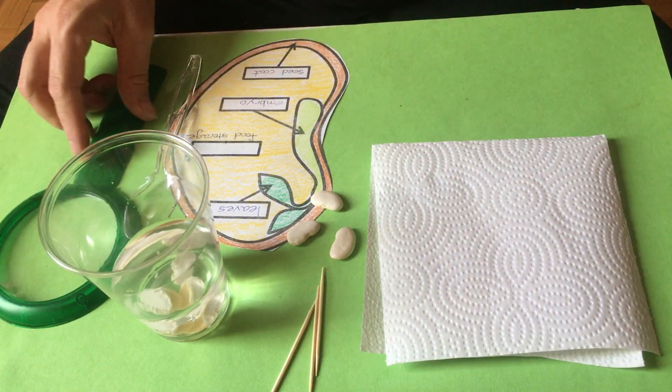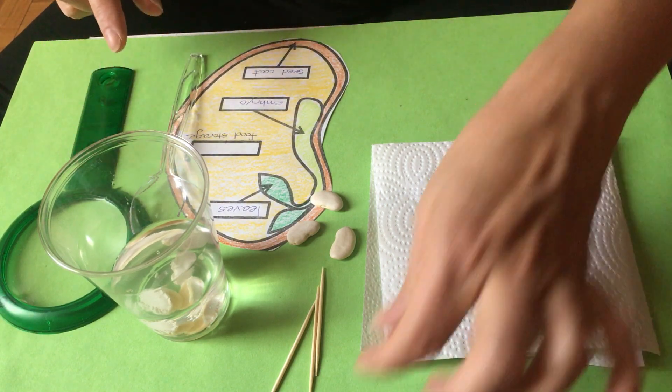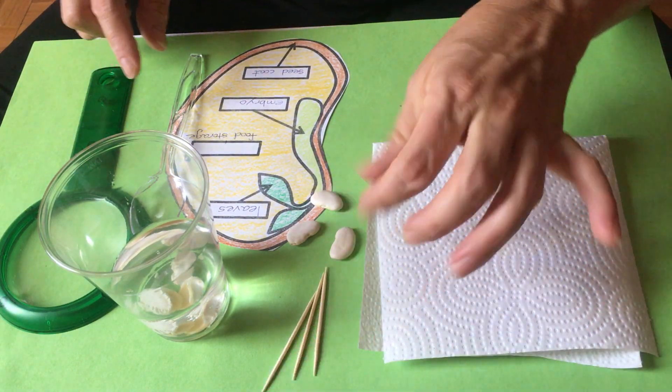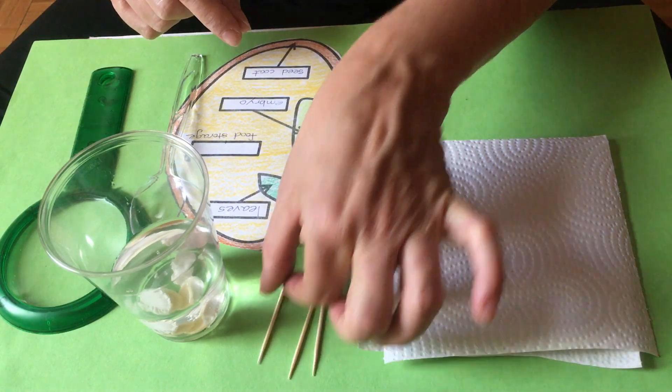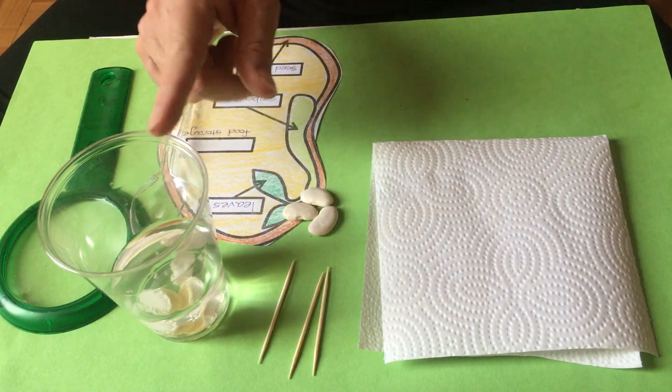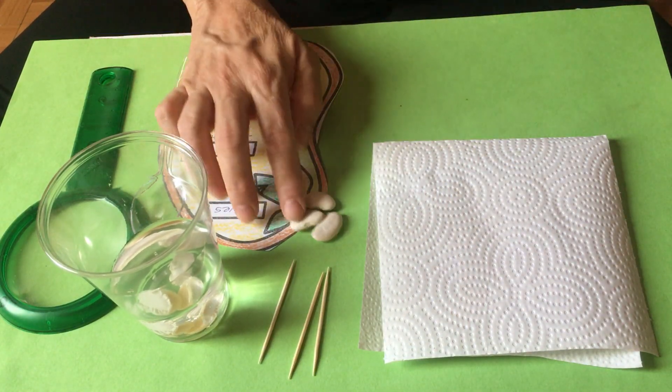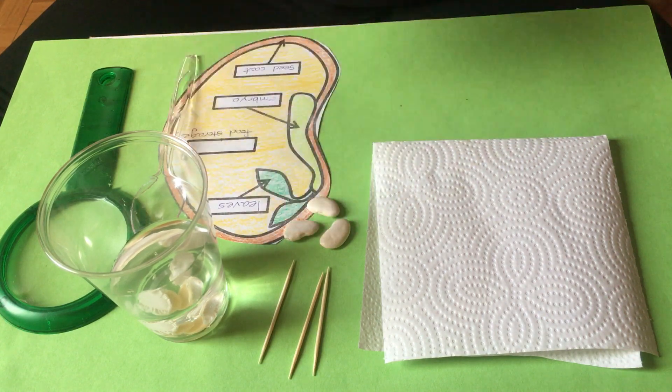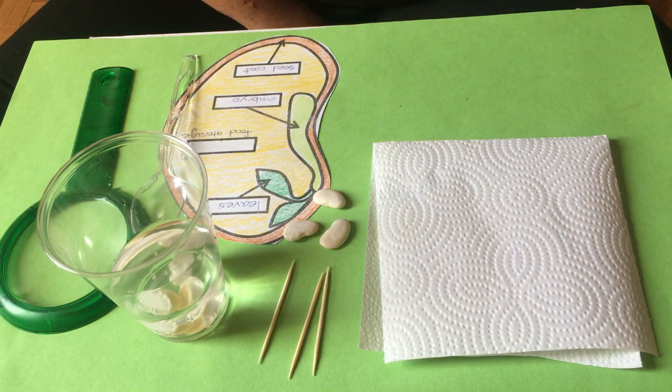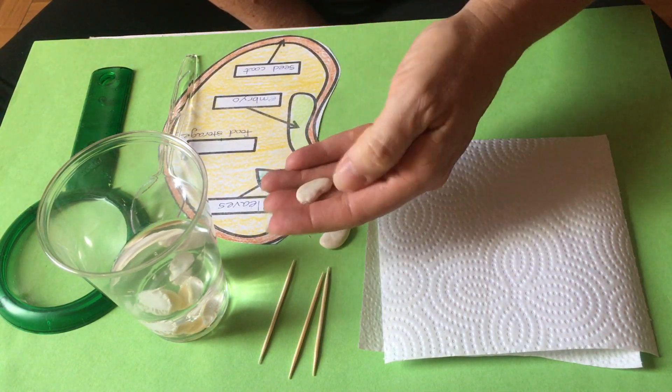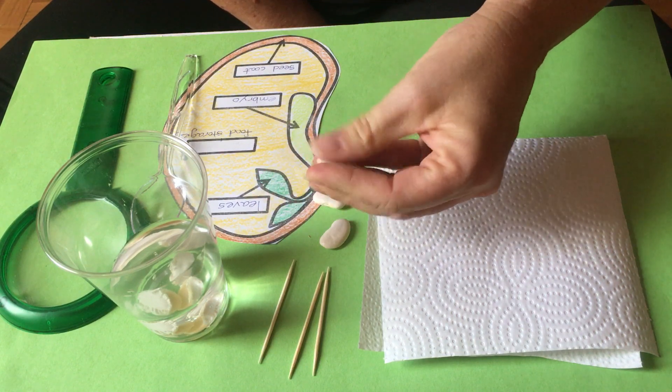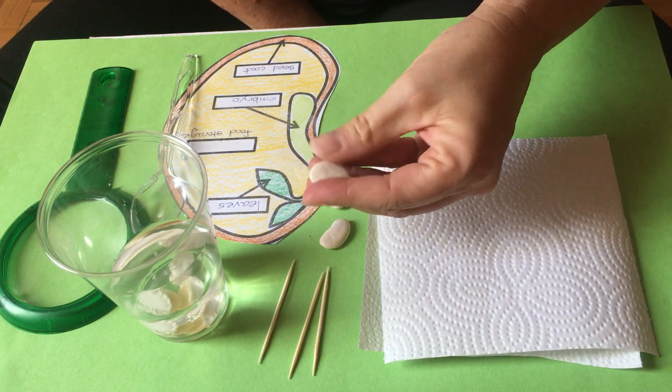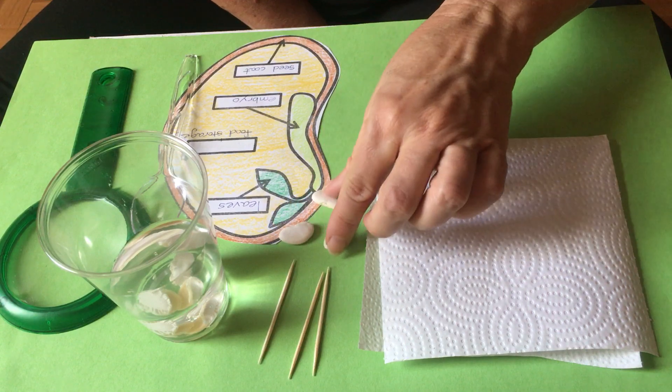your magnifying glass, toothpick in case you need help opening the seed, and your lima bean seeds. I have some extra ones here. This is what the seeds look like before they go into the water - they're hard, they're smooth, and that's how we describe a lima bean seed before it goes in the water.